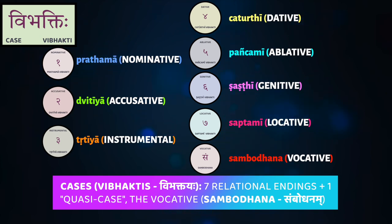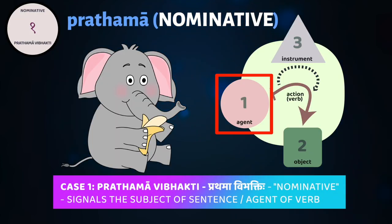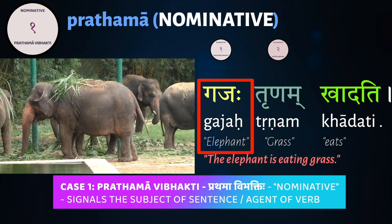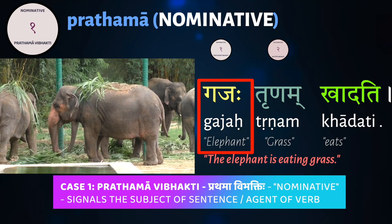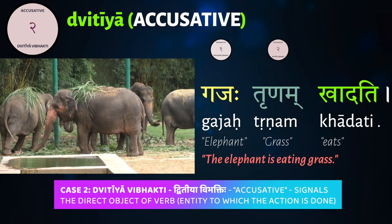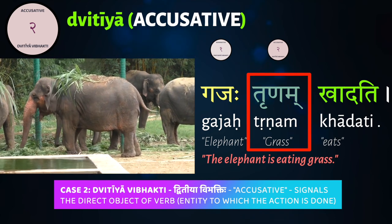From the grammarian's point of view, the vibhaktis are referred to by number: first through seventh. The first is the 'prathama,' the nominative, used when the noun is the subject — the agent of the action of the active verb in the sentence. When we say 'gajaha trunam khadati' (the elephant eats grass), 'gajaha' is in the prathama vibhakti. The second case is the 'dvitiya vibhakti,' the accusative, used when the noun is the direct object — the thing the action is done to. In the same sentence, 'trunam' (grass) is in the dvitiya vibhakti, the accusative.